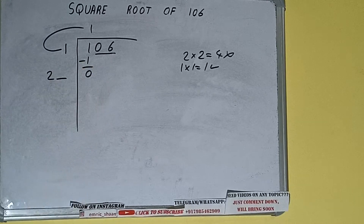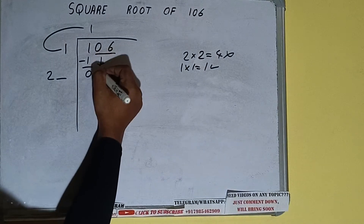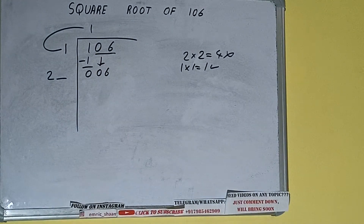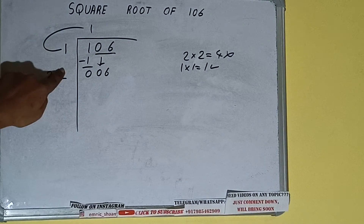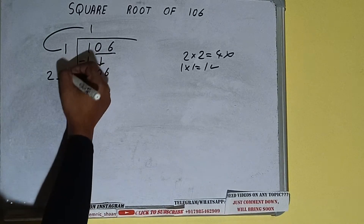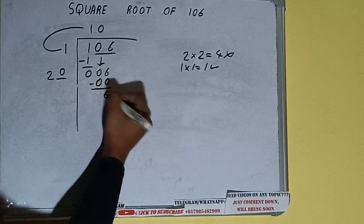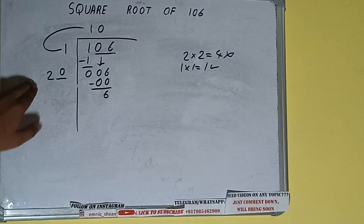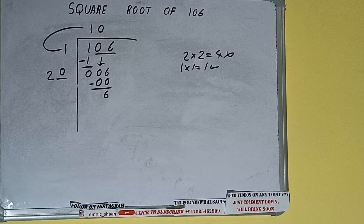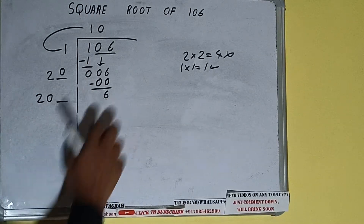This number needs to be made bigger, so bring the next pair down — it will be 006. Whatever number we write here we have to write here also. We can write 0 here and 0 here; it will be 006 again, and 20 into 0 we did. Add both: 20 plus 0 is 20, with one digit extra.